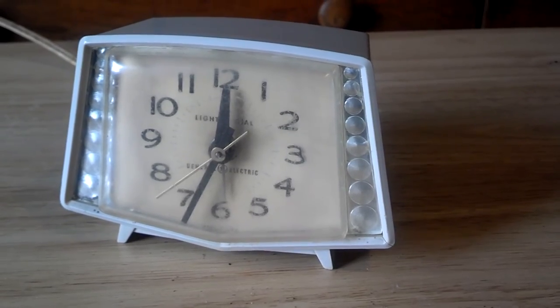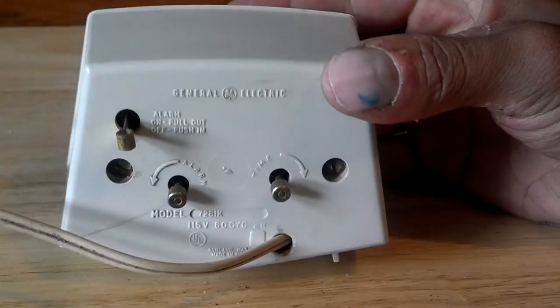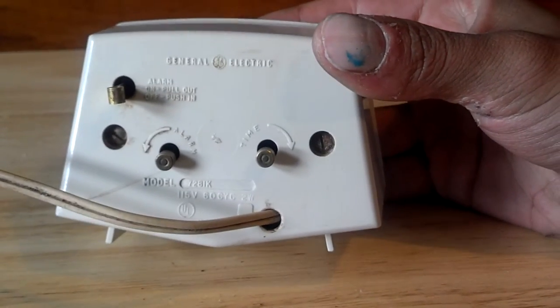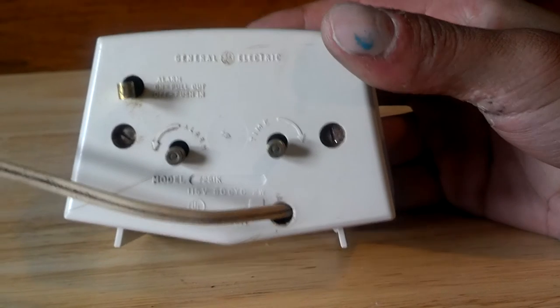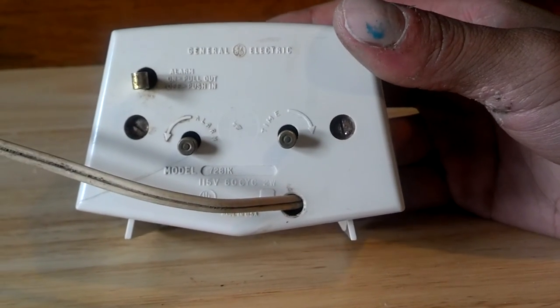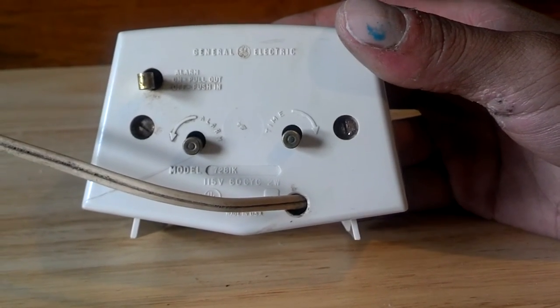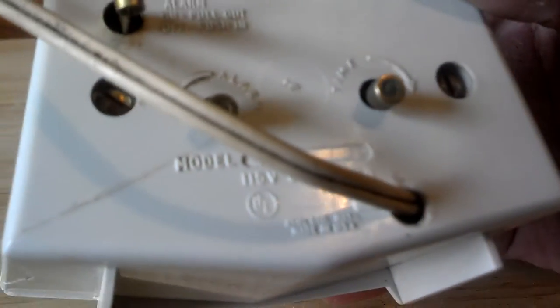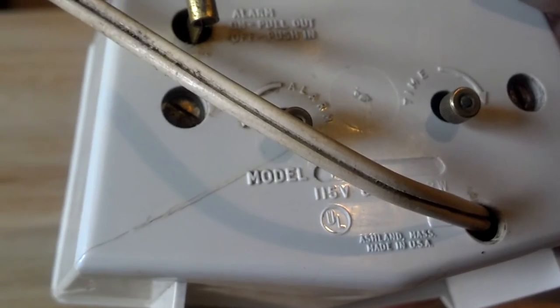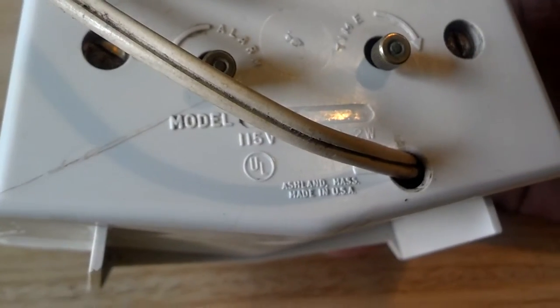It is made in USA. Lighted dial. It's a General Electric Model 7, 281K, 60 cycles, 115 volts, 2 watts. This is Ashland, Massachusetts. Made in USA.